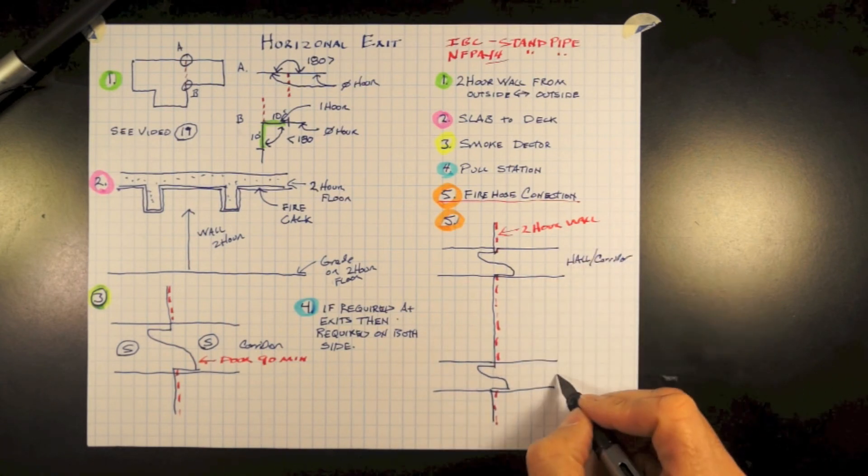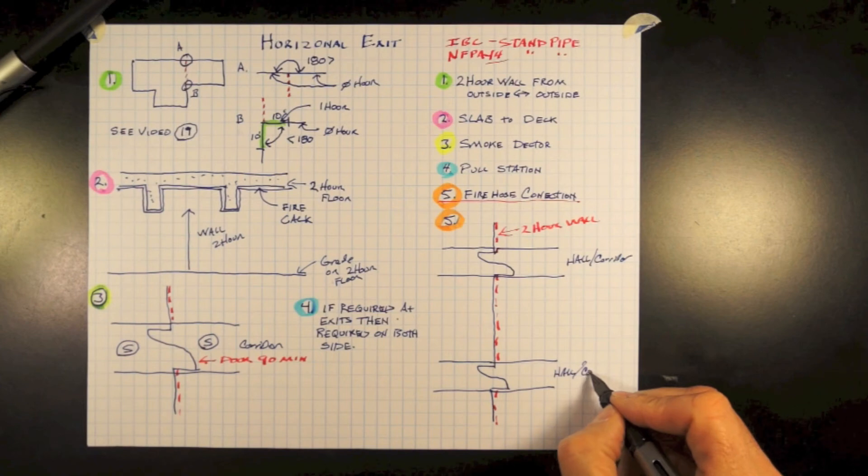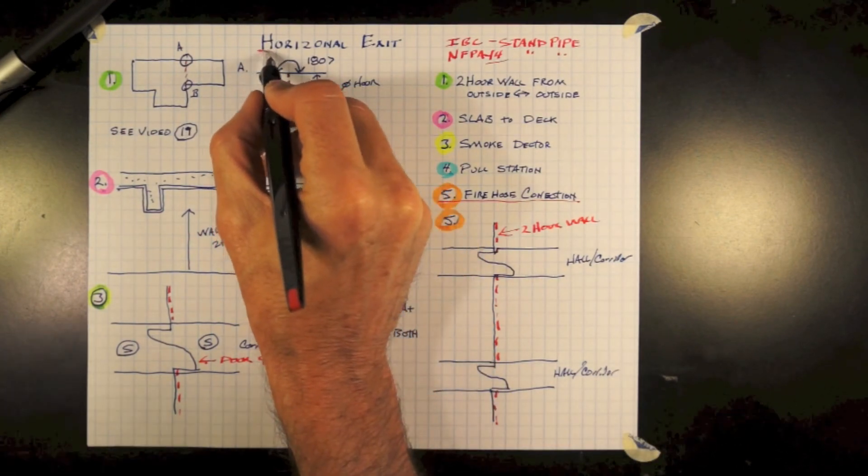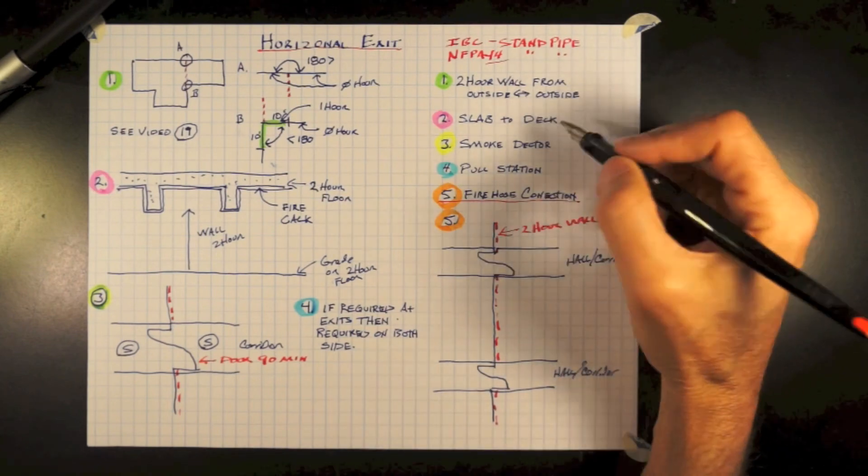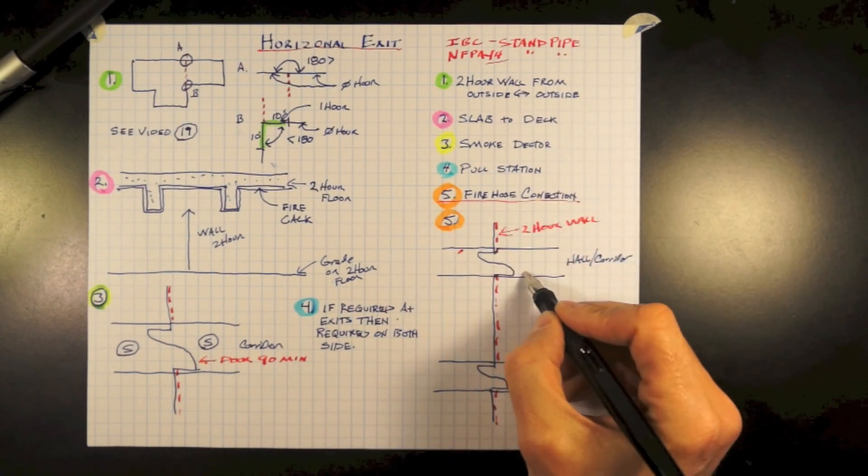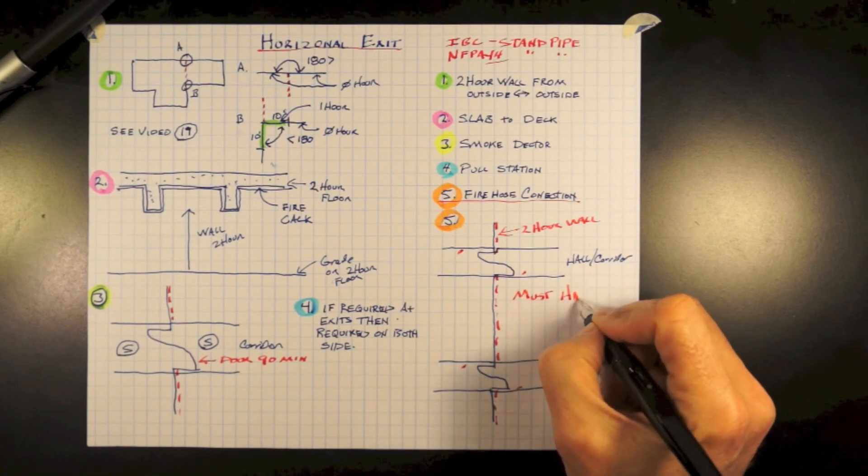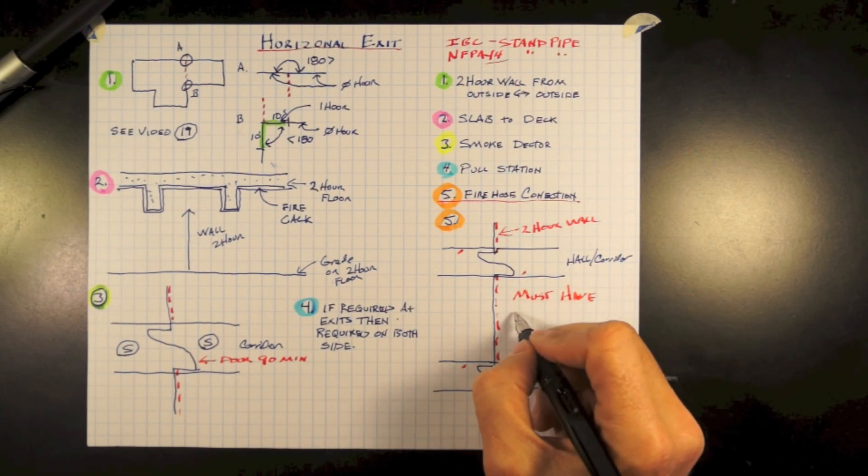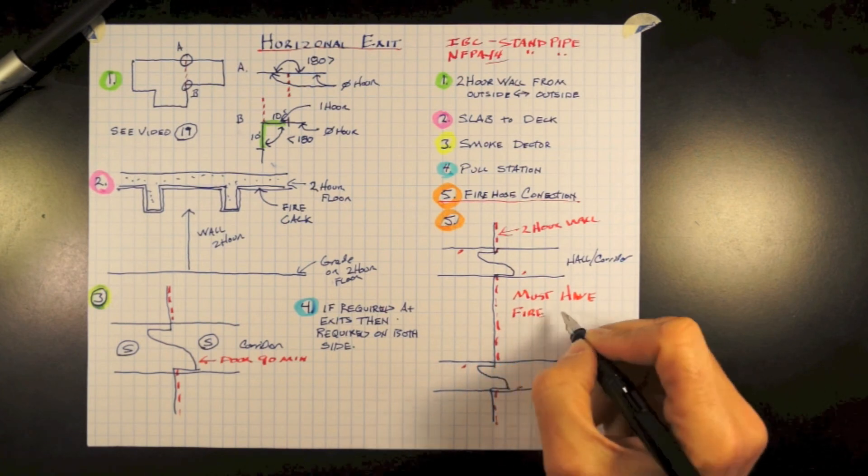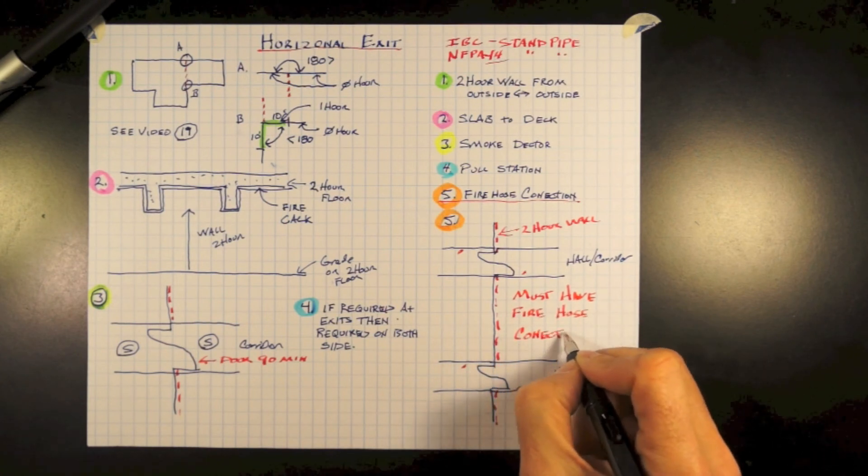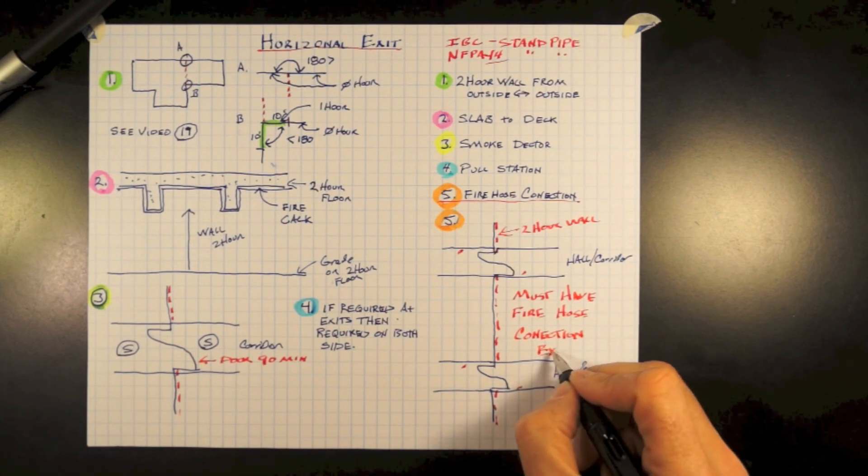And we have two pair of cross-corridor doors here. The wall being two-hour rated, the doors being 90 minutes. So in order to be a horizontal exit, you must have a two-hour rated wall. The slab or wall must go from slab to deck above. Must have smoke detector. Must have pull stations, possibly, on each side. But absolutely, it must have a fire hose connection cabinet on each side of a horizontal exit at every single location.